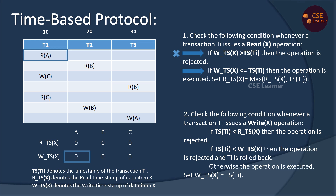We check the second condition: write timestamp of A is less than or equal to the transaction timestamp. That is 0 ≤ 10, which is true. So read of A is executed. We then assign the read timestamp of A as max(read timestamp of A, timestamp of transaction) = max(0, 10) = 10. So the read timestamp of A is updated to 10.